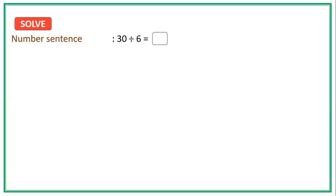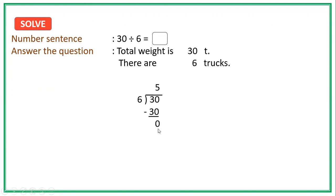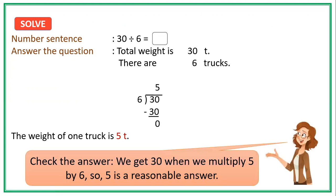Now let us solve. Our number sentence will be: 30 divided by 6 is equal to blank. The total weight is 30 tons and there are 6 trucks, so 30 divided by 6 equals 5. Therefore, the weight of one truck is 5 tons. To check: 5 times 6 equals 30, so 5 is a reasonable answer.